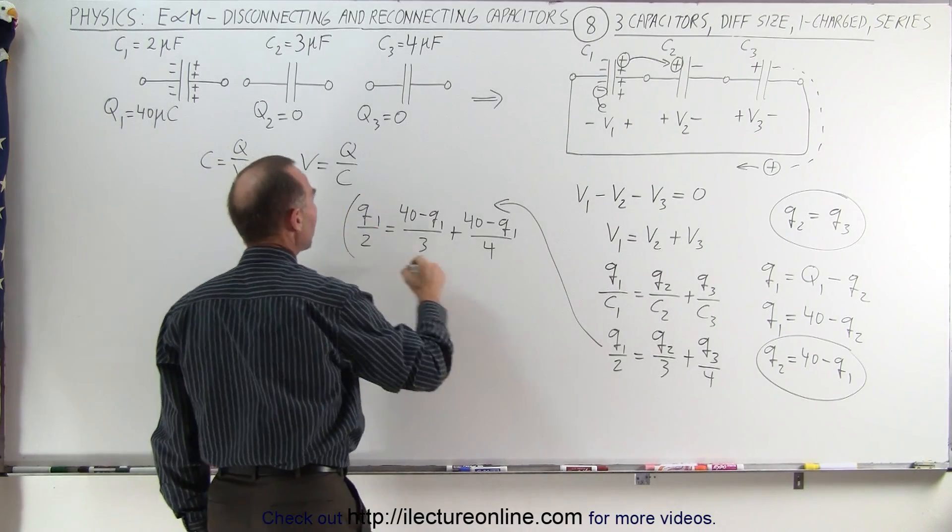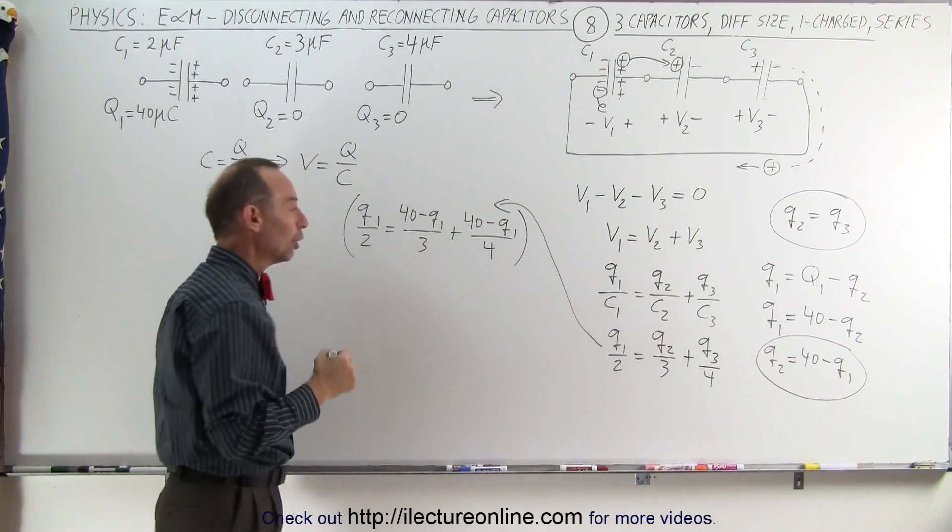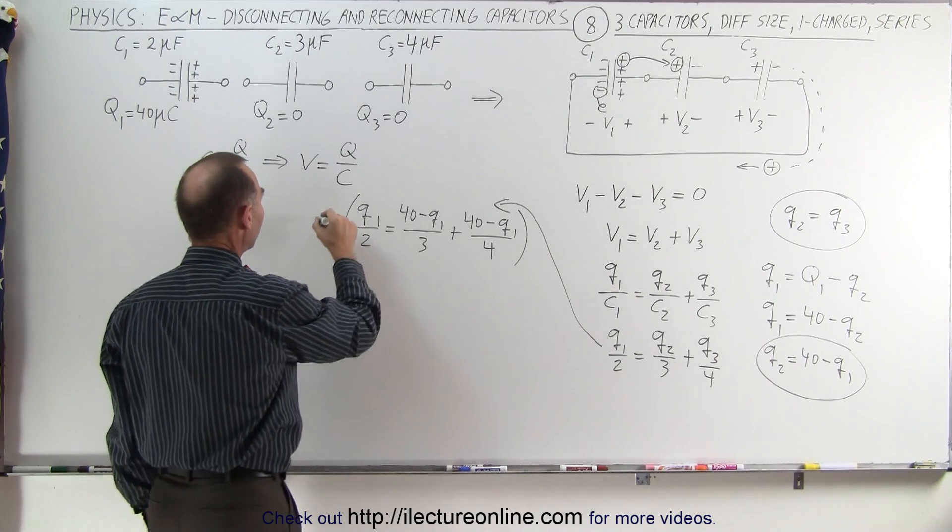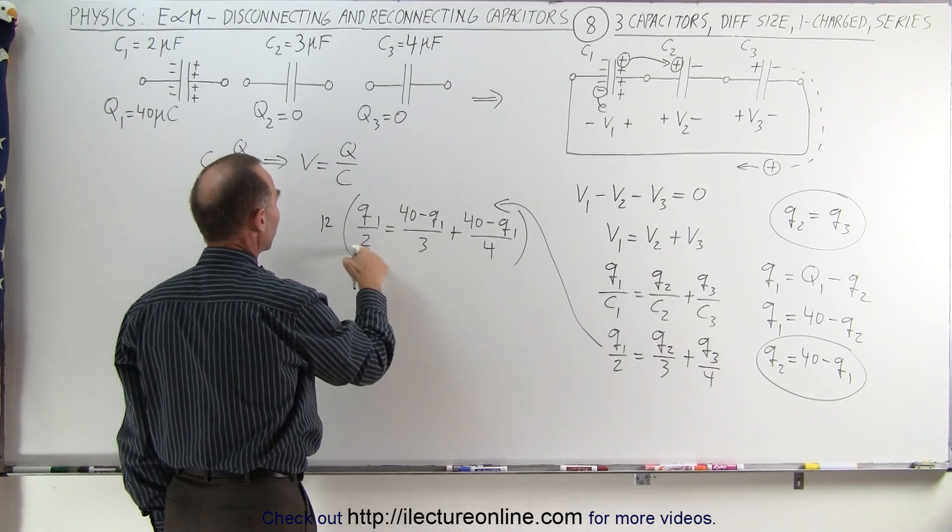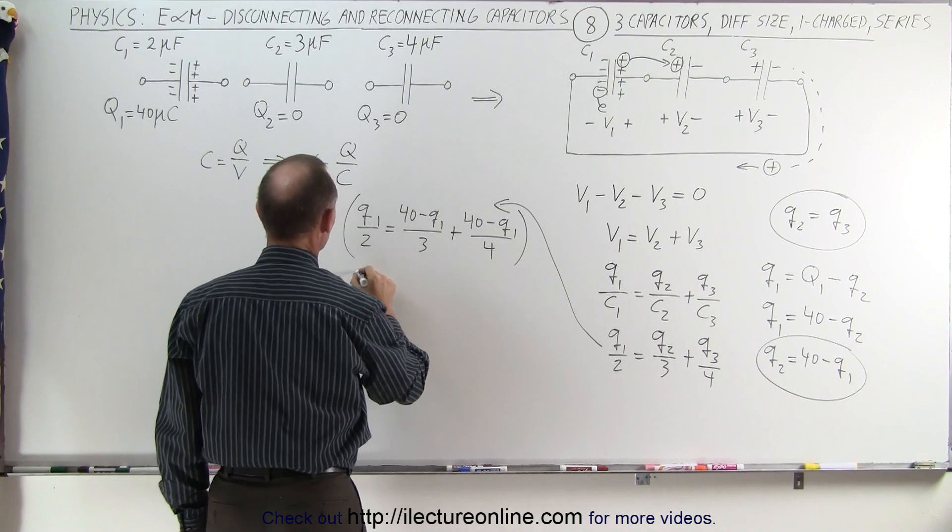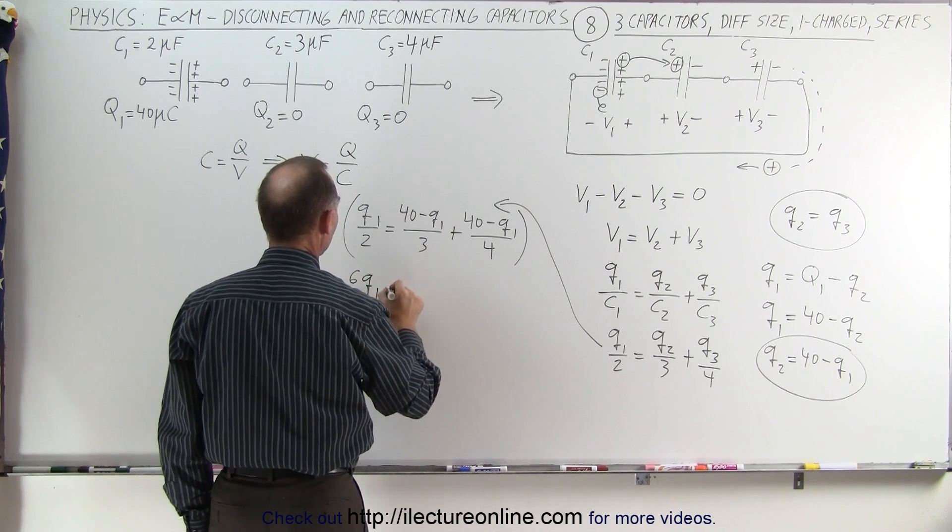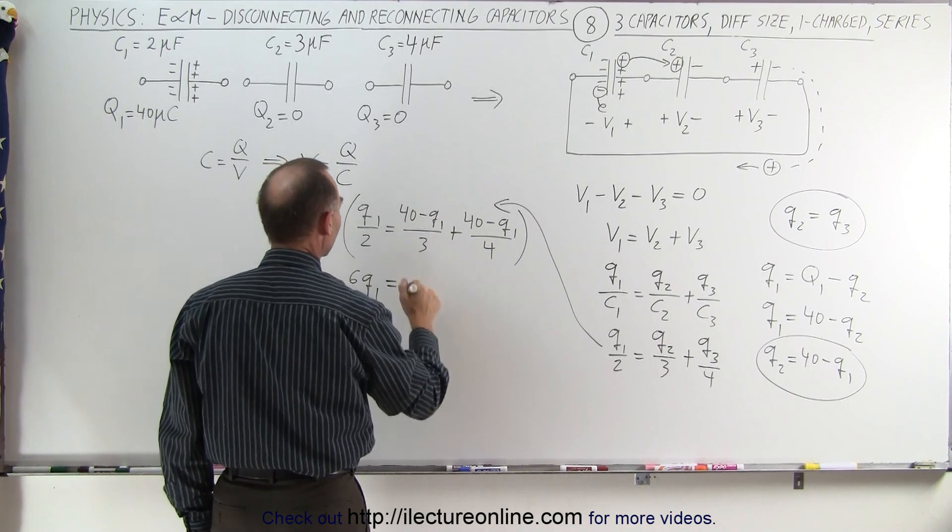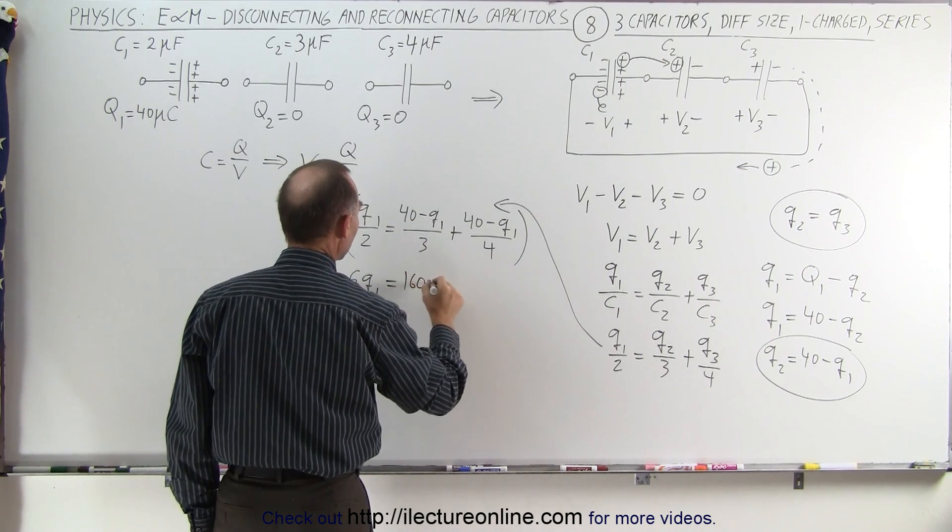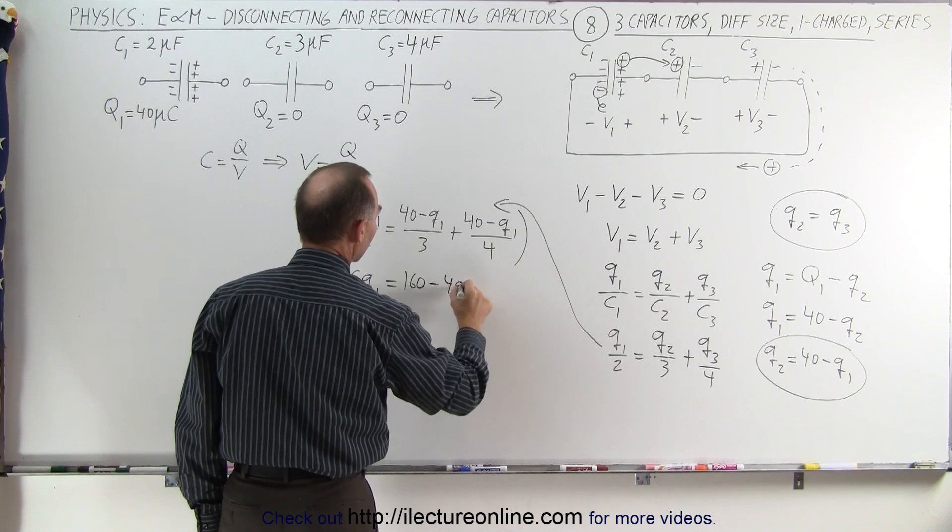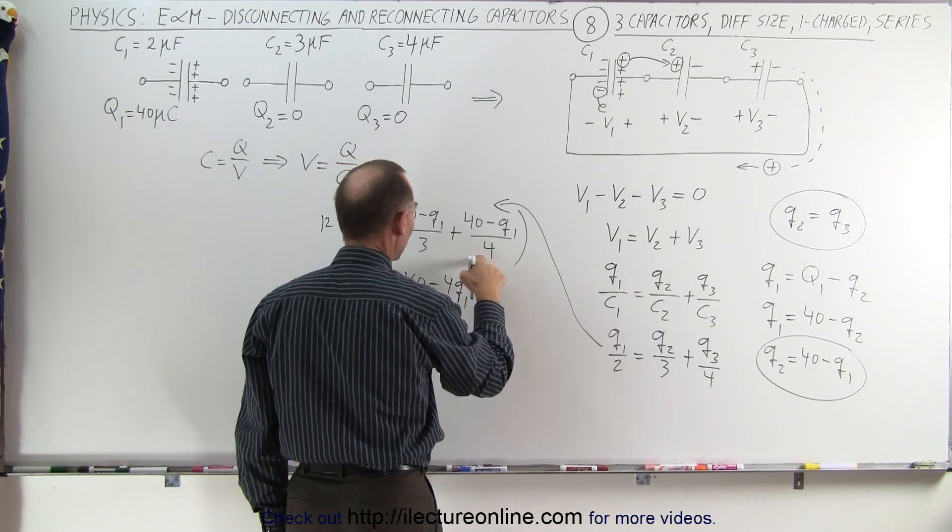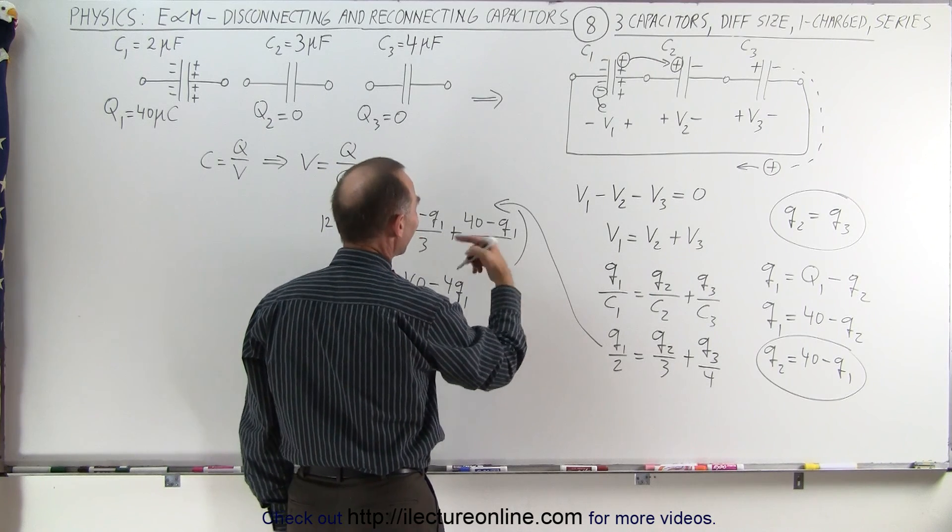Now we must multiply both sides of the equation by the lowest common denominator. In this case, the lowest common denominator is 12, and so 12 divided by 2 is 6, so we end up with 6Q1 equals 12 divided by 3 is 4, 4 times 40 is 160, minus 4 times Q1, and 12 divided by 4 is 3, so plus 120 minus 3Q1.